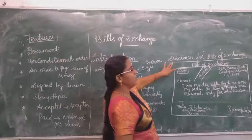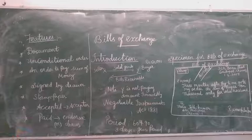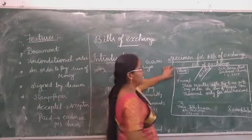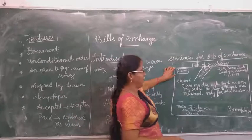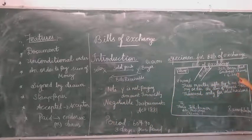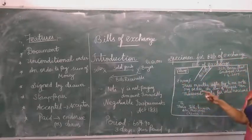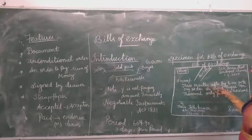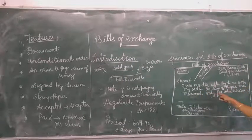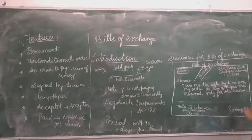This is the specimen of a bill of exchange. Let us see the specimen. It should be written on a stamped paper. Here you have to write the address — all the address of who is receiving the goods. The amount, 10,000 or 15,000 rupees, and the instruction: 3 months after, pay to me or to my order, whatever amount the buyer is receiving.